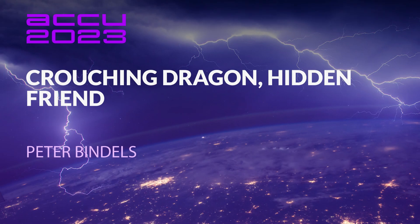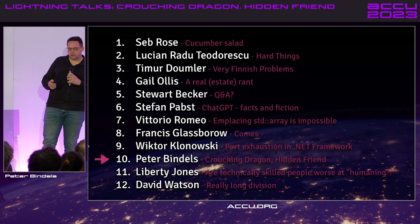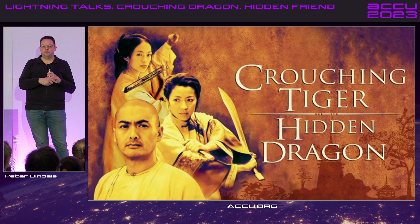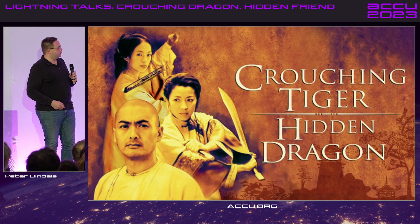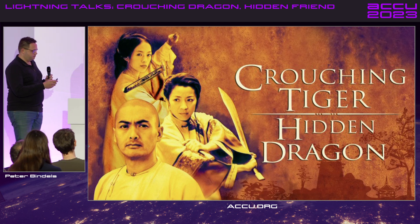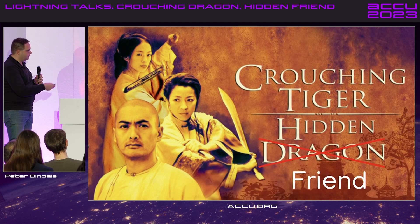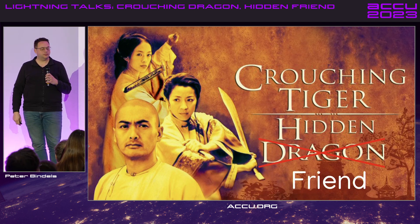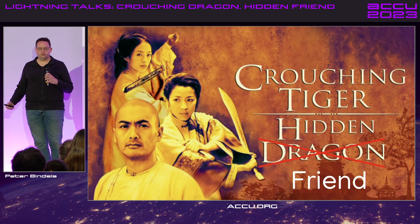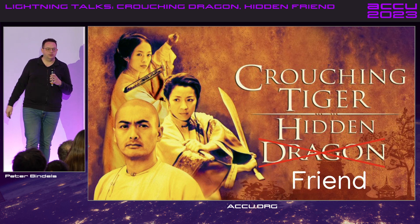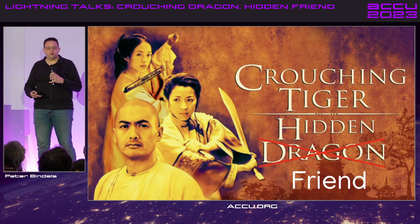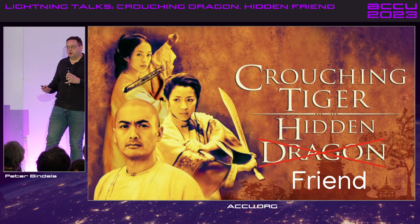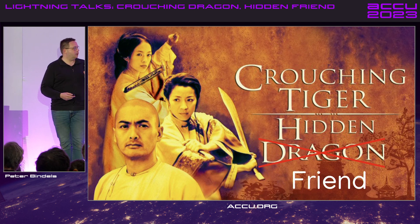So you can talk about anything at a lightning talk, and I decided I wanted to talk about something boring. Has anybody seen this movie? I forgot to fix the title. Has anybody seen that movie? Crouching Tiger, Hidden Friend? No? Too bad. So let's talk about hidden friends. It's a thing that I think everybody who touches or sees C++ should know about, and most people do, but some people don't.